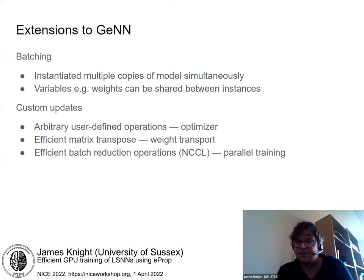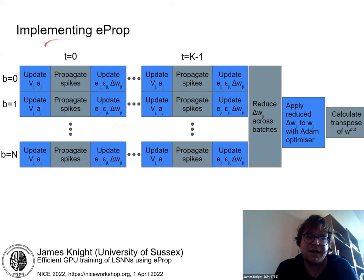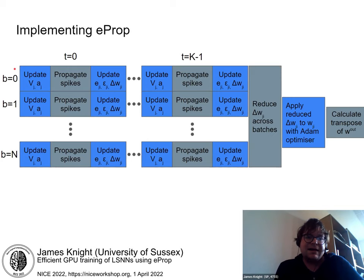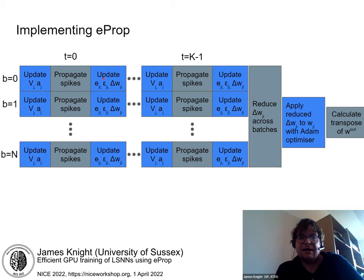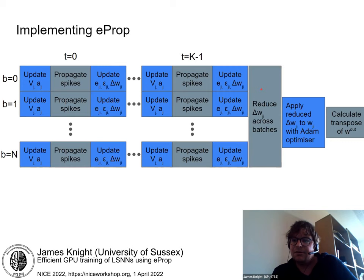For an E-PROP simulation with N-batch and K time steps per stimulus, we first launch a kernel to update membrane voltage and adaptation variables, then another to propagate spikes, and a third to update eligibility traces and calculate delta weights each time step — a continuous weight update, which makes this rule somewhat expensive. After K time steps, we run a custom update to reduce gradients across batches, another to apply them with an Adam optimizer, and a third to calculate the transpose of the output weights. Then we repeat.